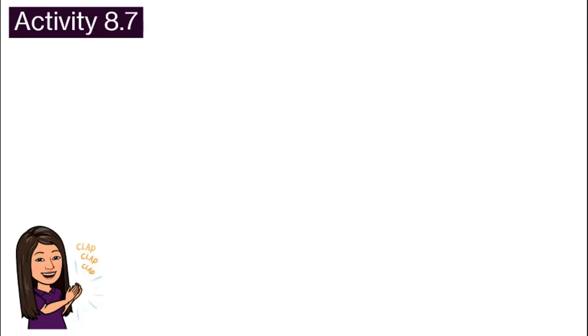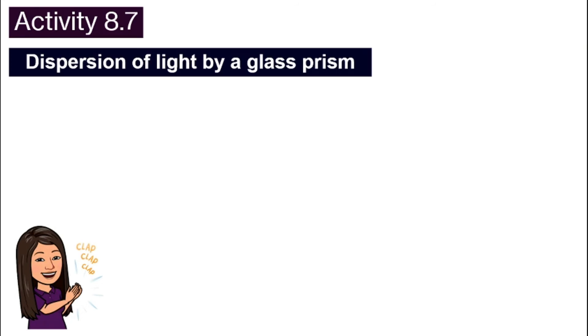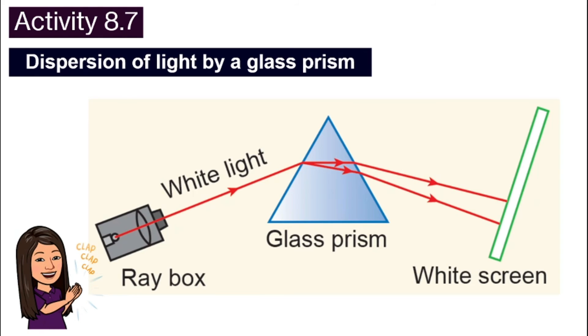Well, in your textbook, page 238, there's an activity, activity 8.7. When we all go back to school, I'm quite sure your teacher will allow you to carry out this activity, where the first one is the dispersion of light by a glass prism, where we will use a ray box as our source of white light, direct it to a glass prism and you can catch the spectrum on the white screen right here. The detailed step-by-step instructions, you can find it in your textbook again, page 238.